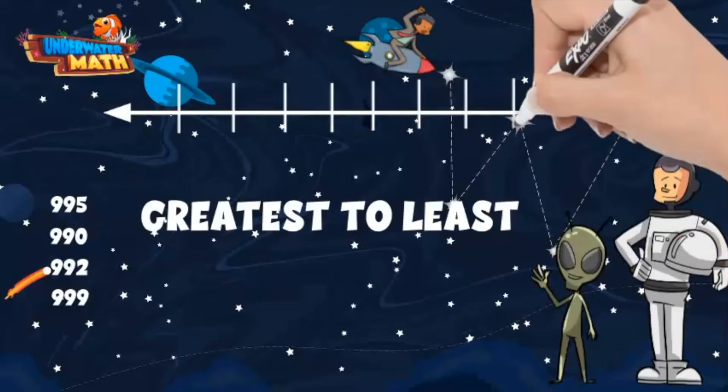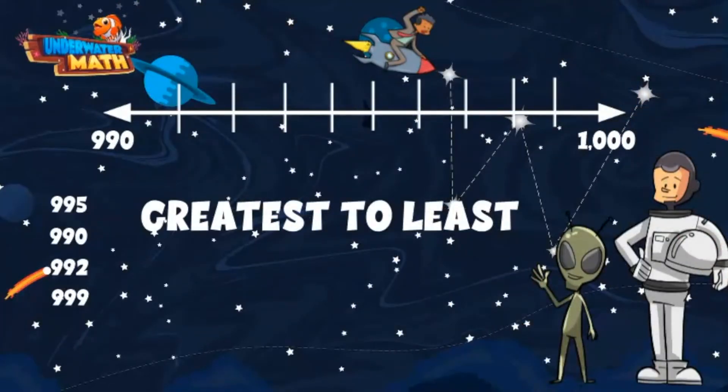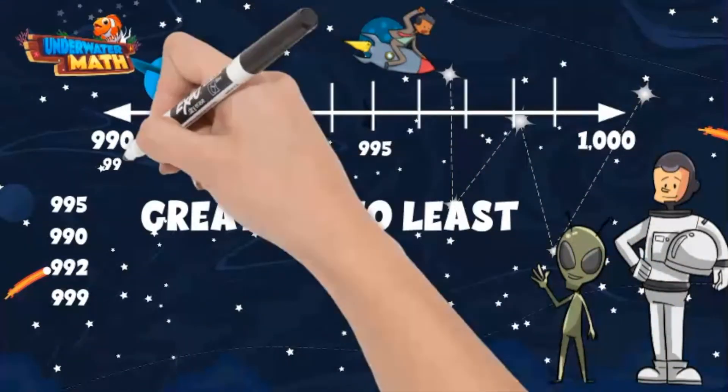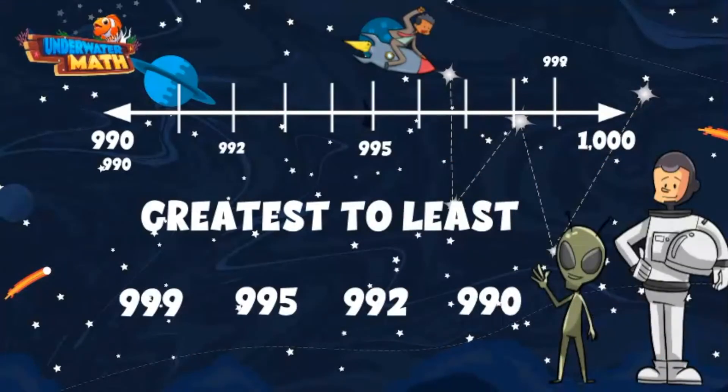We can place each of our numbers on the number line and then order from greatest to least, which means largest to smallest. Numbers closer to 1000 are greater and we can move number by number as we work our way down to 990. Here we go. Our greatest number is 999 followed by 995, followed by 992, and lastly 990.